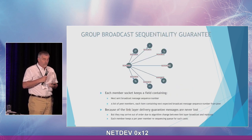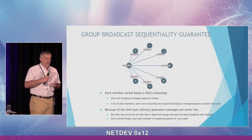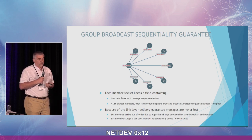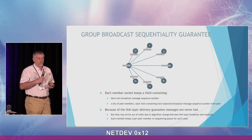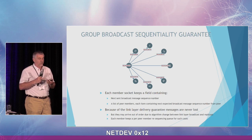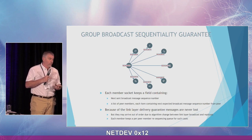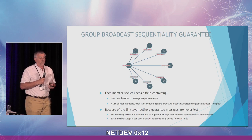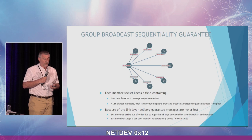Each broadcast sent contains a sequence number, and each member tracks the last broadcast sequence number received from a particular socket. So if a broadcast arrives out of order due to an algorithm switch — say you receive sequence N+1 while expecting N — the receiving node places it into a reordering queue, waits for the missing broadcast, then rearranges and delivers in order.